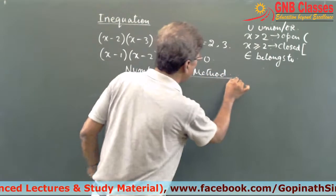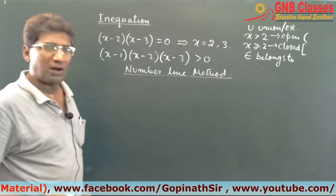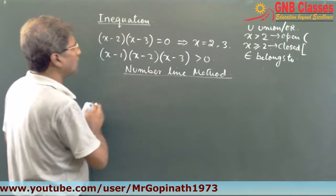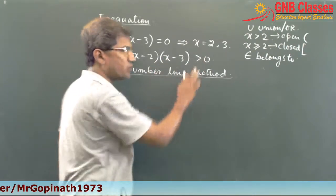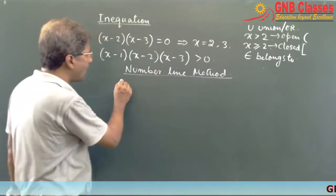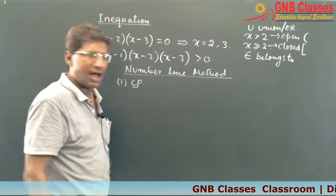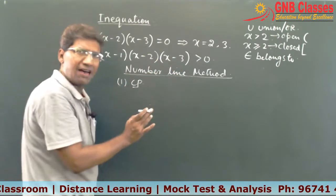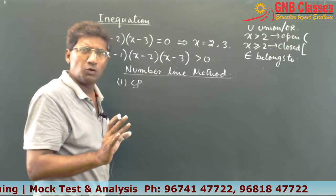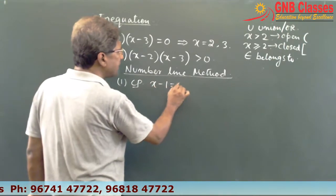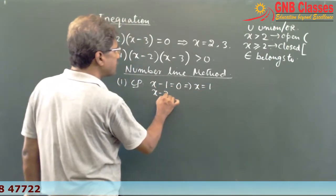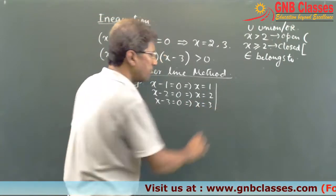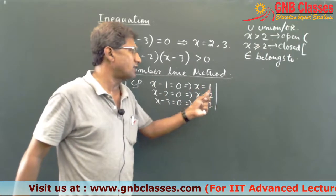So be ready with your pen and paper. Let me take this example: x minus 1 into x minus 2 into x minus 3 is greater than 0. The first step is to find the critical points (CP). Put each factor individually equal to 0: x minus 1 equals 0 gives x equals 1; x minus 2 equals 0 gives x equals 2; x minus 3 equals 0 gives x equals 3. So the critical points are 1, 2, and 3.